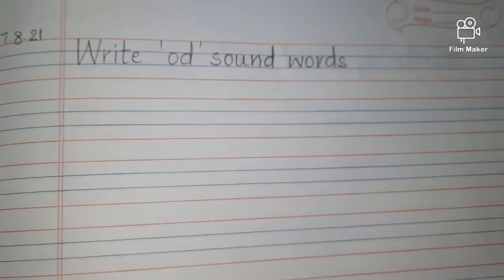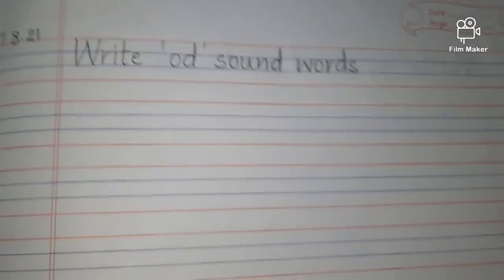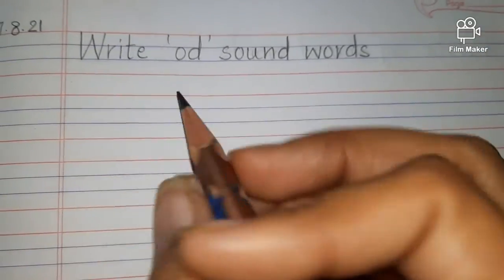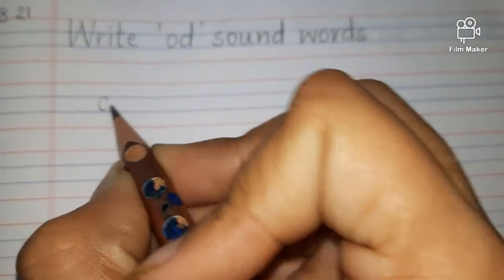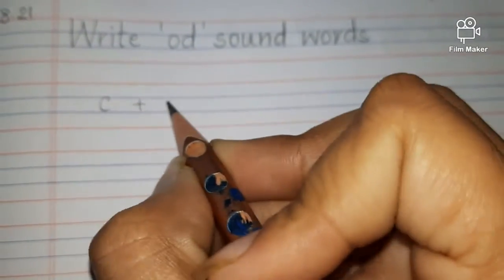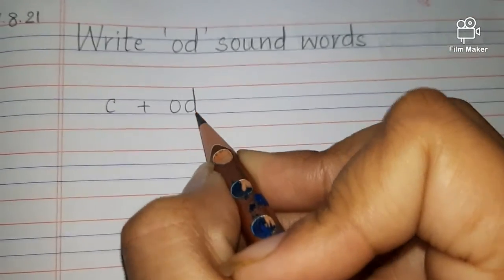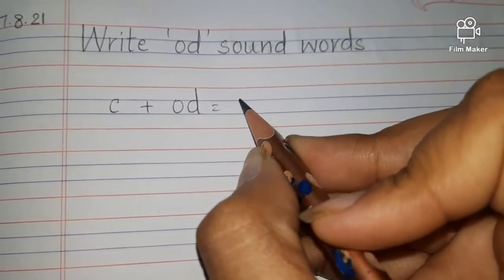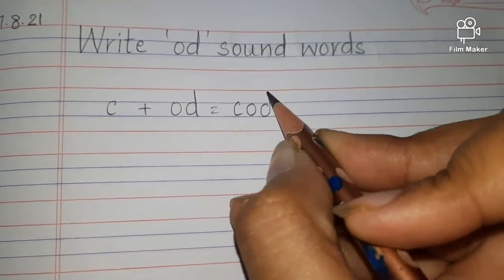We are going to write down the OD sound words over here. The first word is COD. C plus OD. What word will be formed? COD.